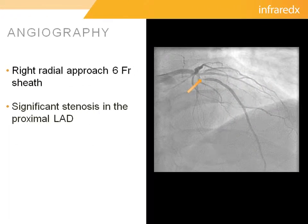Initial angiography was performed from a right radial approach using a 6 French system, and as you can see by the arrow here, we see a very significant lesion in the proximal LAD. But it was unclear exactly how far this lesion extended, both proximally and distally. You can see it arises at the takeoff of a pretty sizable diagonal branch, and there was concern that it may have extended back into the left main.